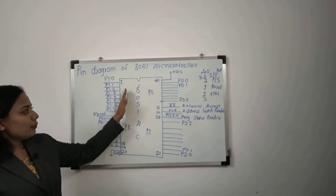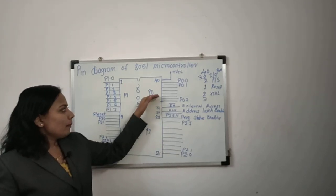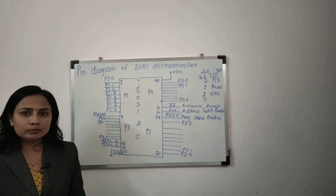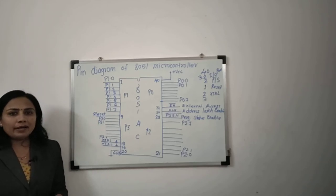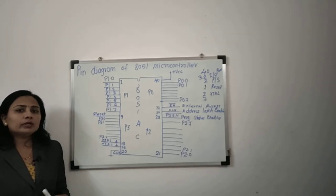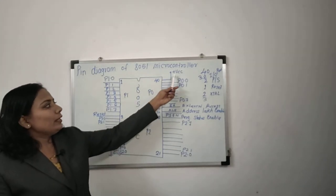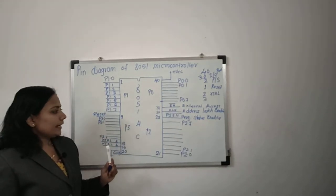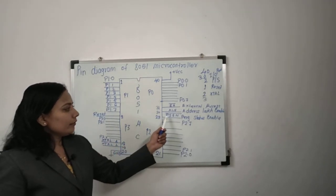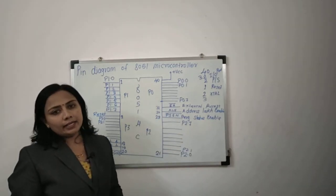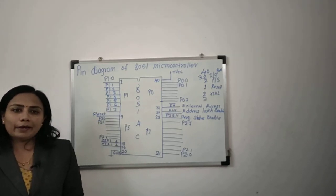On the left-hand side you have P1 and P3 port, and on the right-hand side you have P0 and P2. This is all about the structure of the 8051 microcontroller. In the next lecture, we will see the functionality of each and every pin — the value of plus VCC, what reset does, the circuit connection at XTAL1 and XTAL2, and the functions of PSEN, ALE, and EA pin separately.